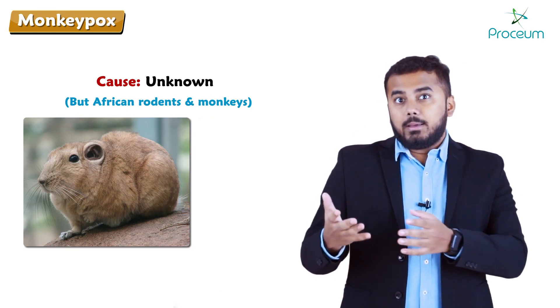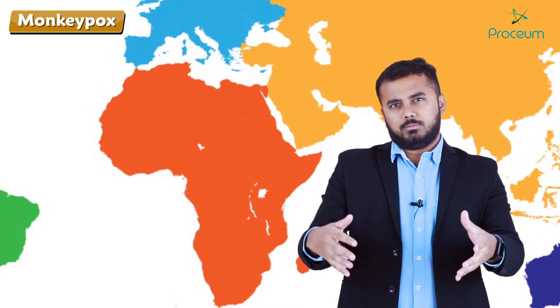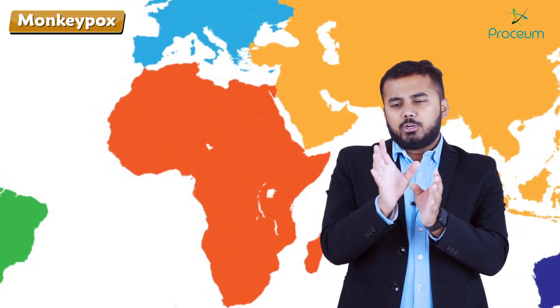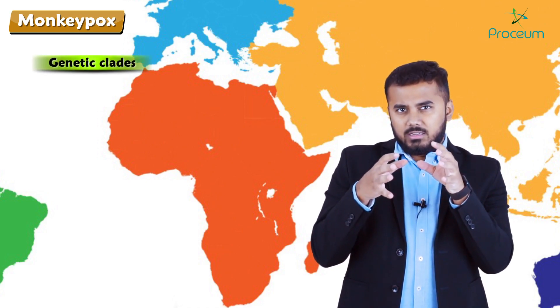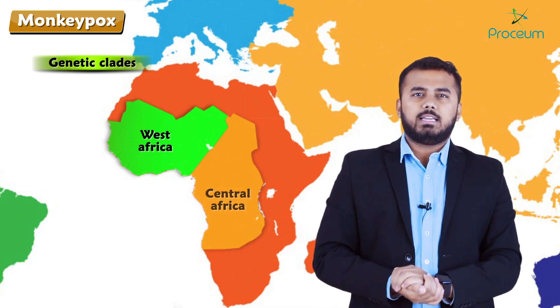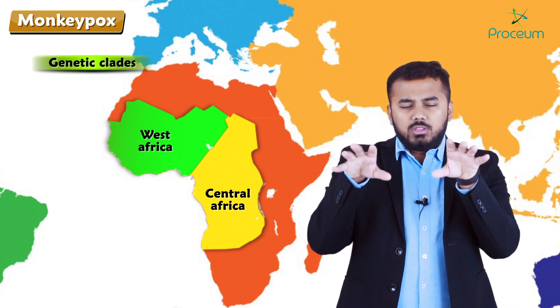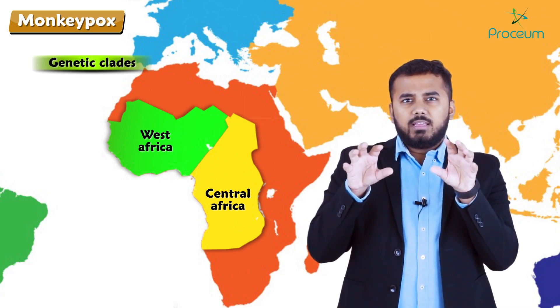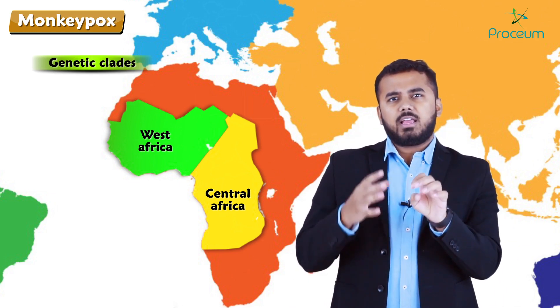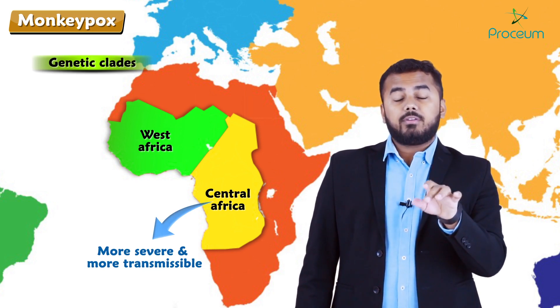The main cause of monkeypox is still unknown, but researchers suggest that African rodents and monkeys are responsible. There are two basic genetic clades: one associated with Western Africa and one with Central Africa — specifically the Congo Basin. Disease severity and transmission are more severe in Central Africa compared to Western Africa.